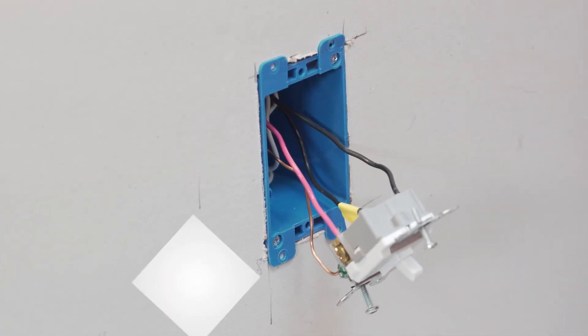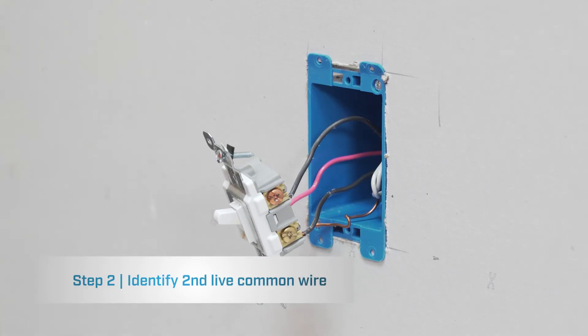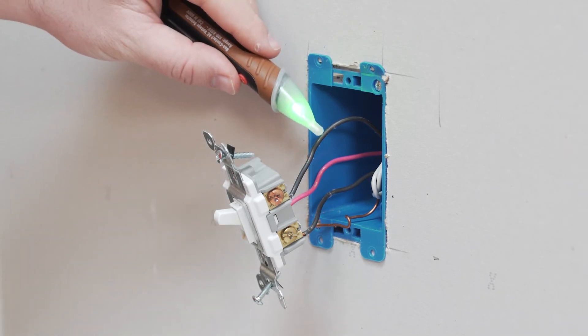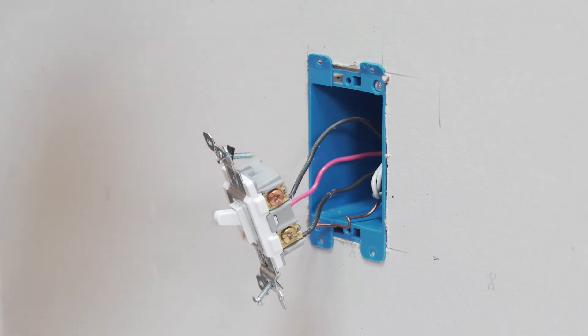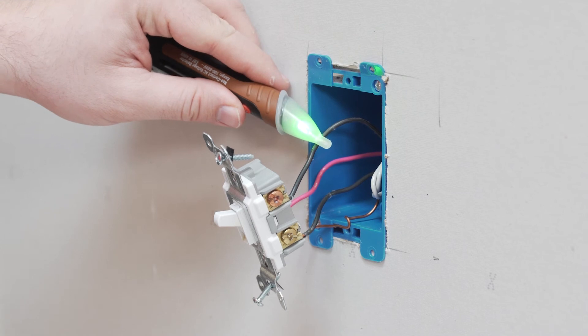Next we'll test the second location. We only need to test the common wire to determine whether or not this is going to the fixture or coming from the circuit breaker. We already know from the previous box that it has the circuit breaker, so this is going to the fixture, and you can confirm this by testing it.